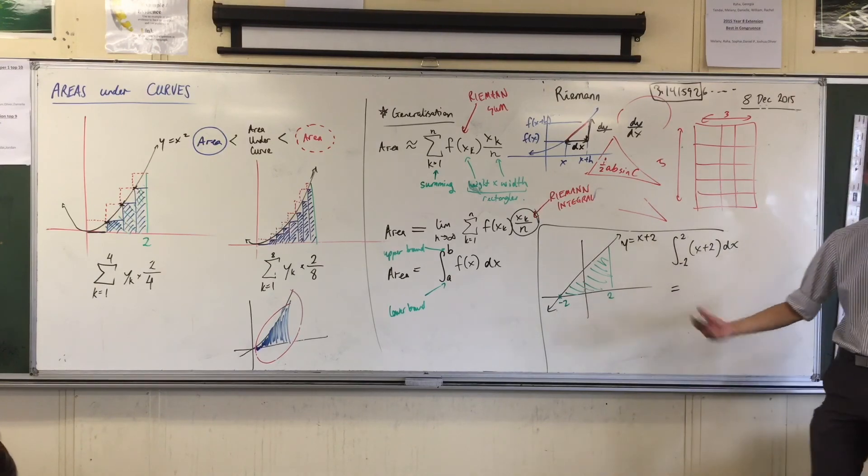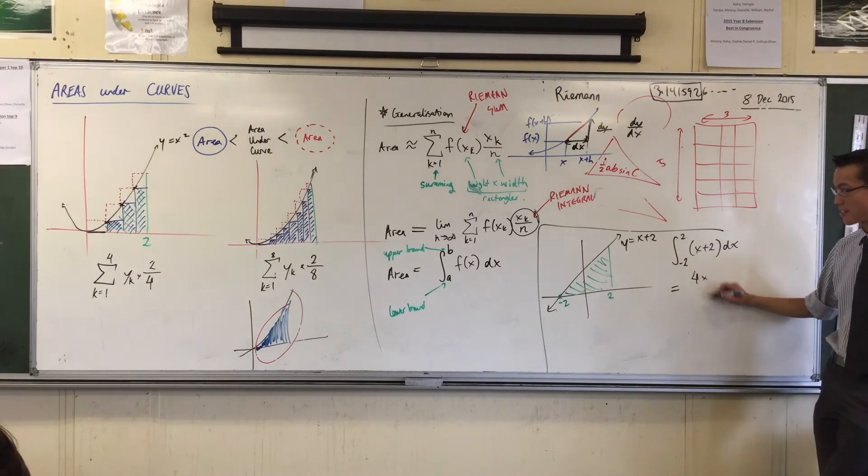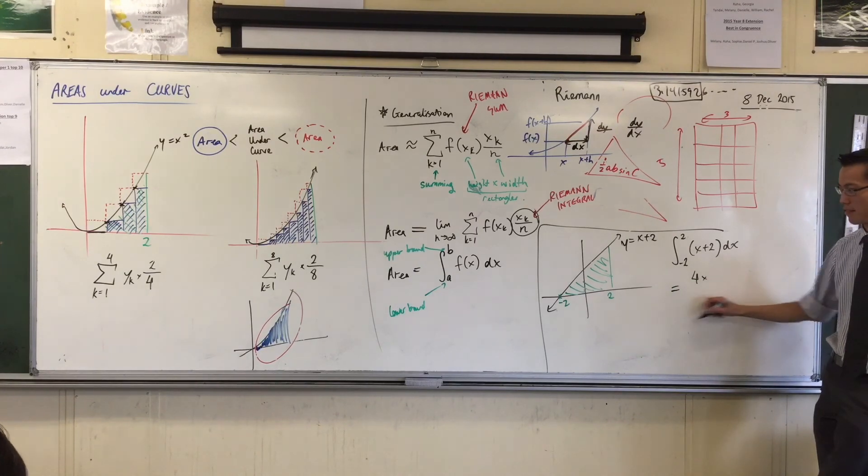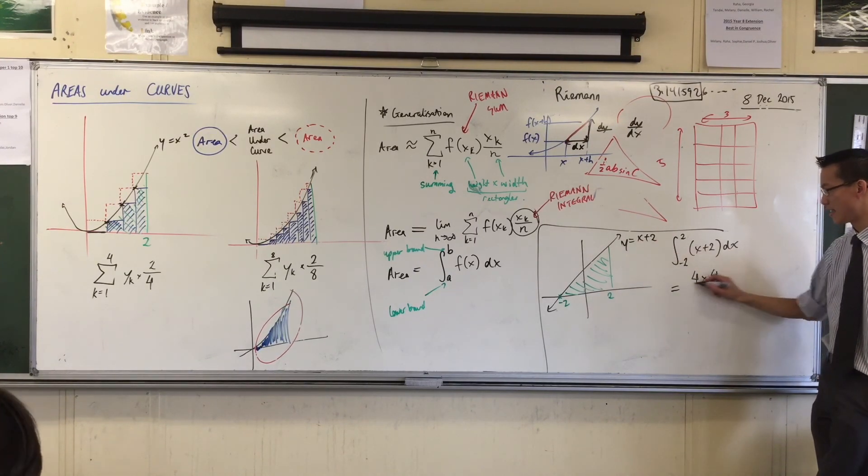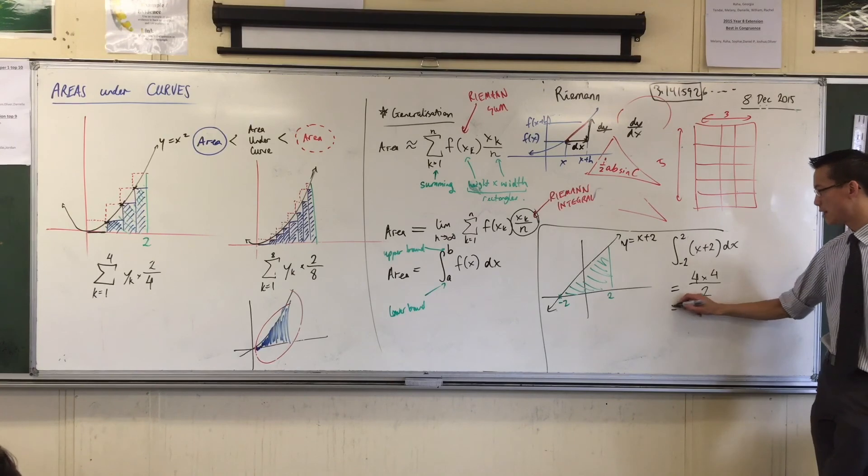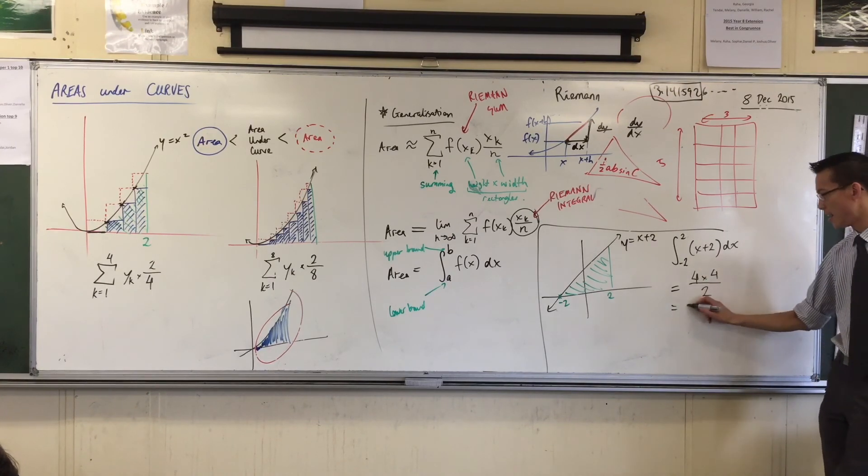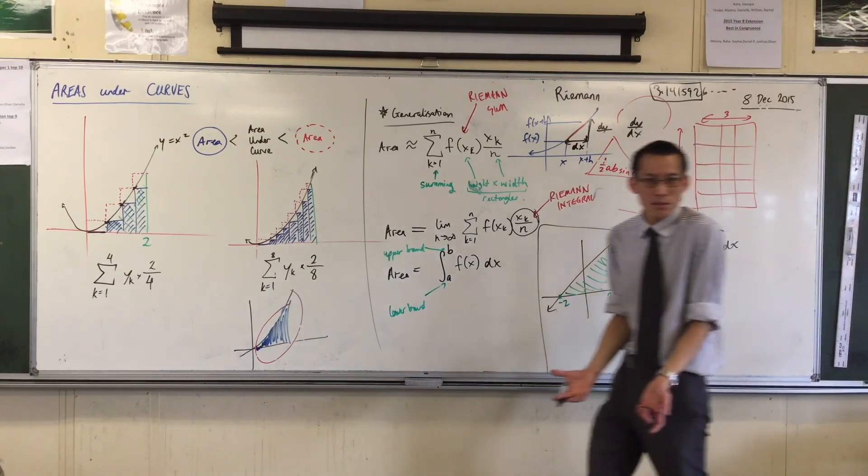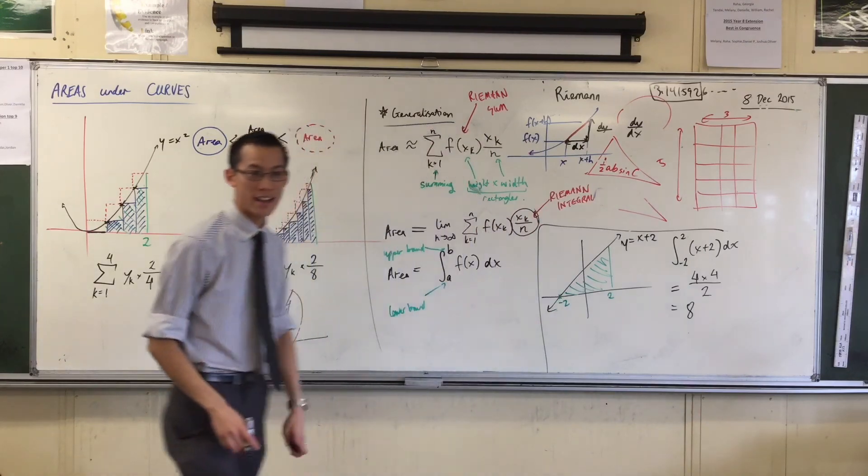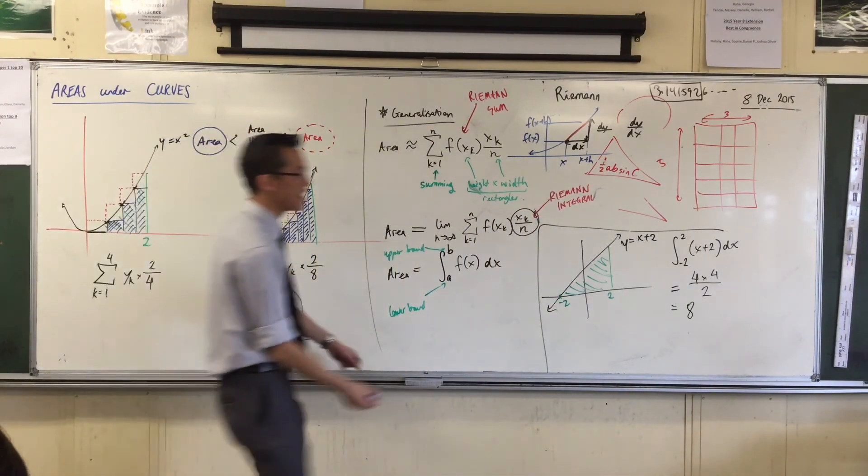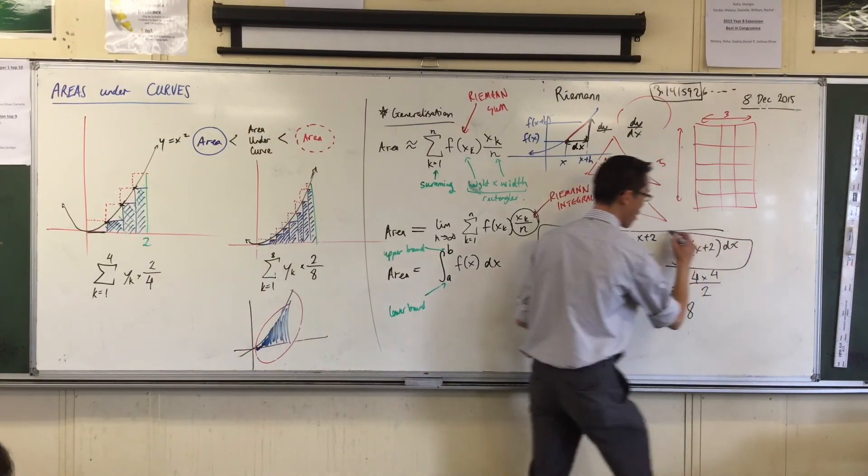The base is going to be 4, the height's going to be 4. Divided by 2. So this integral is an area, it's just 8, that's all it means. That's all it means. An integral is an area, that number.